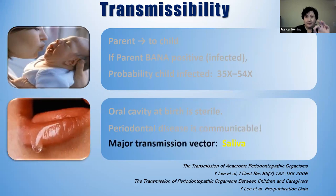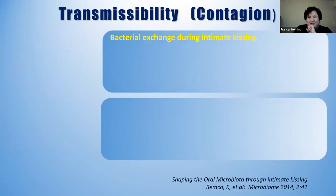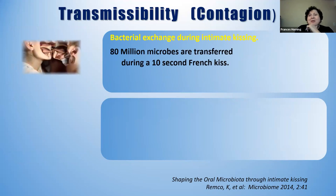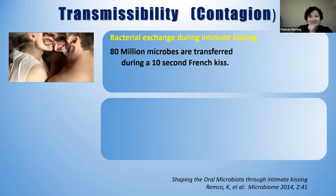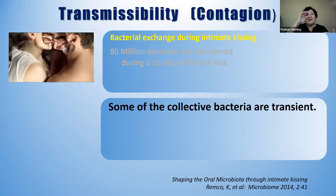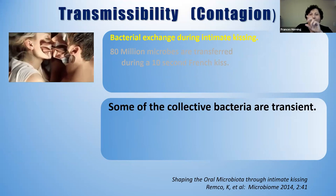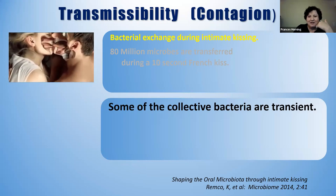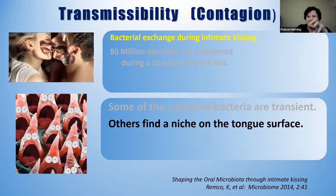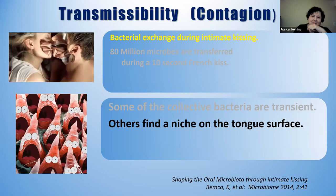The major transmission is through saliva. There are three major ways to transmit periodontal disease. Through bacterial exchange during an intimate kiss — there are about 80 million microbes transferred during a 10-second French kiss. Some bacteria can collect on the tongue, on the cheeks, in the posterior part of the mouth, and can actually reinfect the rest of the mouth and other sides of the teeth.